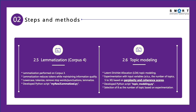We then used lemmatization on corpus 3, simplifying words while maintaining information quality. This was done via a custom Python script. Next, we applied LDA topic modeling. We experimented with varying numbers of topics based on coherence and perplexity scores. Our experiment determined 8 as the optimal number of topics.